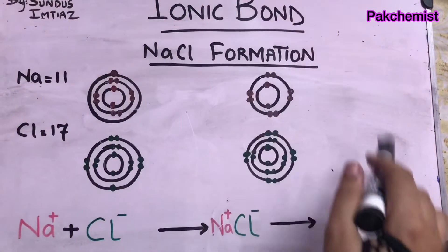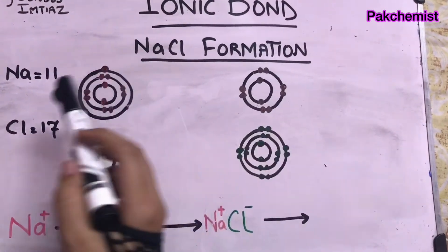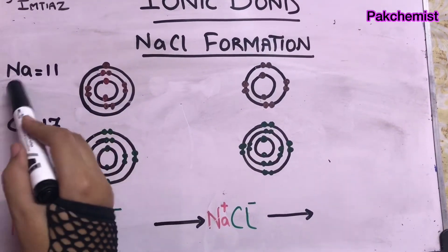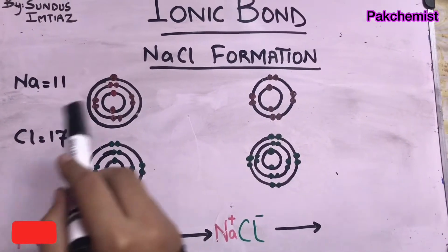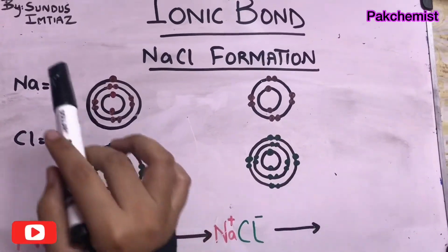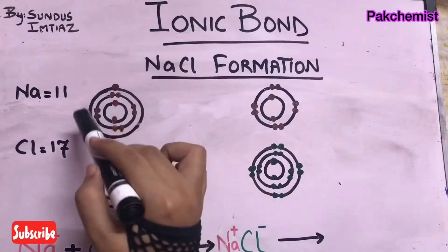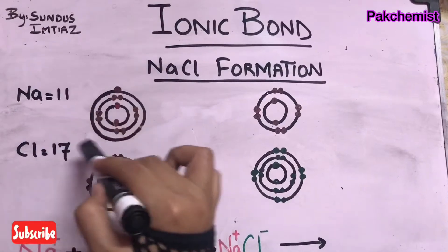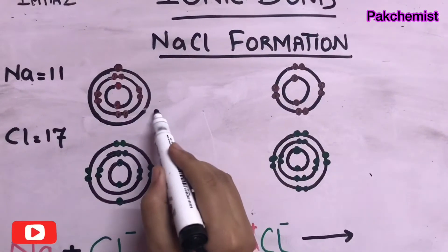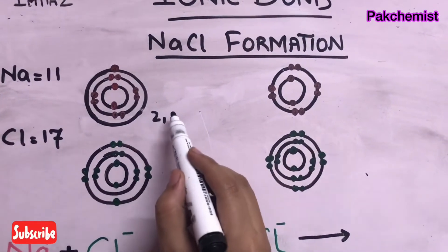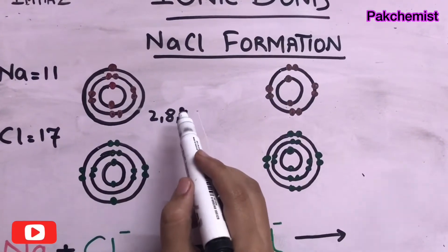This is an example of NaCl formation. Let's see how they form this ionic bond. Na has atomic number 11, meaning it has 11 electrons. In the first shell it has 2 electrons, in the second shell it has 8 electrons, and in the third shell it has only 1 electron.